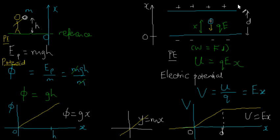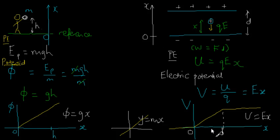I've talked about the potential graph for a charged object in between two parallel plates. I now want to talk about the gradient of this graph. The gradient of the potential graph actually has a physical meaning. Let's find out what it is.